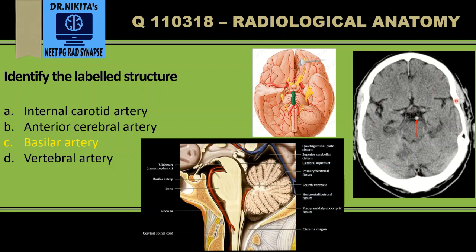Corresponding to it on the CT image, here would be the terminal internal carotid, which divides into the middle cerebral artery running along this course, and the anterior cerebral artery located anteriorly in the interhemispheric fissure.